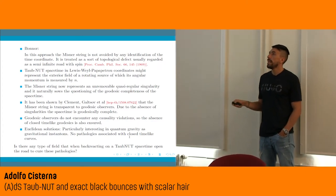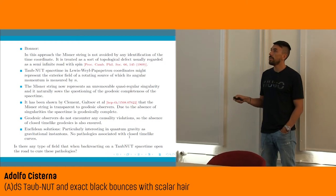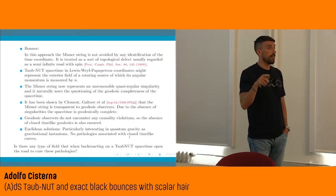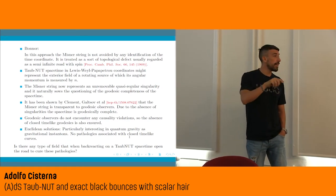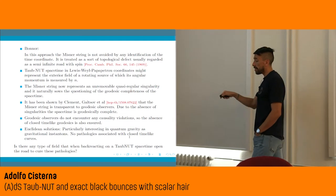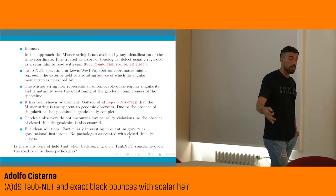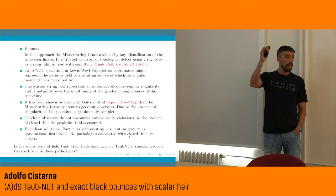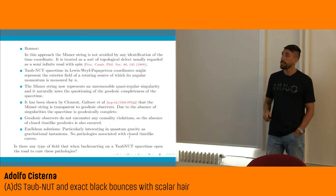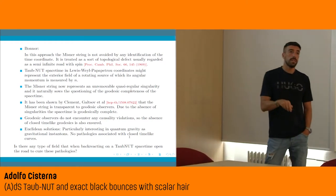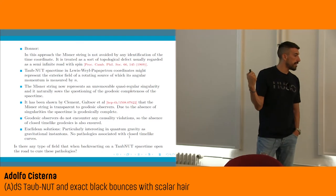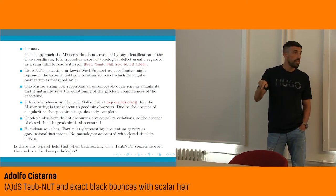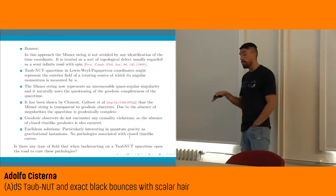A few years ago, in 2015, Clément, Gal'tsov and collaborators showed that actually, by using a trick similar to Misner's, you can make the Misner string invisible for some particular type of observers. So in the Taub-NUT spacetime, although there is always a Misner string and half the axis is singular, Gal'tsov and company showed that you can use a similar coordinate trick to prove that geodesic observers can avoid the presence of the Misner string.